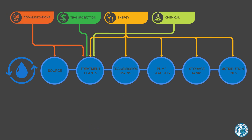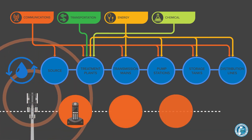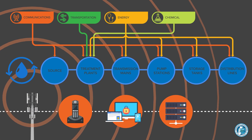Water treatment, transmission, pumping, storage, and distribution facilities all rely on communication infrastructure for telephone and data services needed to operate, monitor, and maintain the security of the water system.